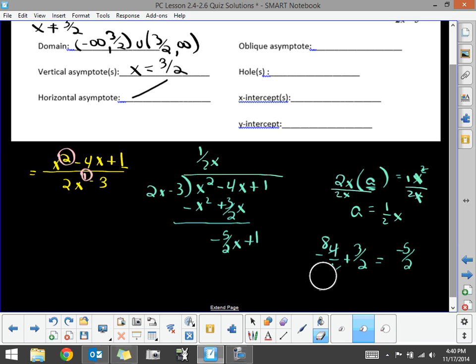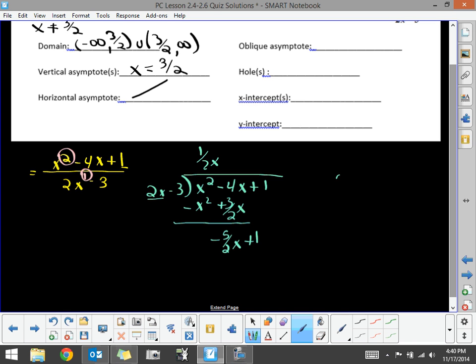Now what do I multiply 2x by? This is my mindset of what I think about. I need to be able to take this 2x and end up with a negative 5 halves x. So what do I multiply 2x by? Again, I'll use a to get a negative 5 halves x. So I'm going to divide by 2x. Well, rather than divide it by 2x, I'm going to multiply by 1 over 2x.